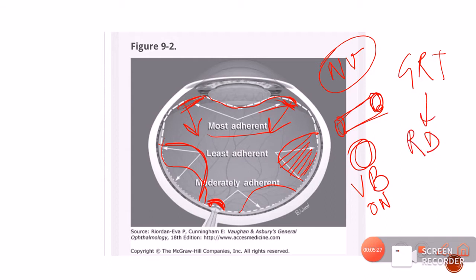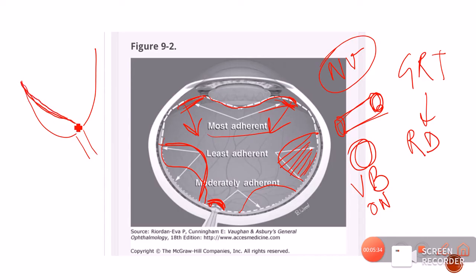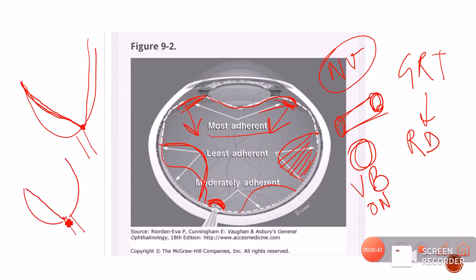Even once a PVD separates — if it is an incomplete PVD — the attachment will be on either side of the disc and not exactly in the center of the disc. However, in case of an RD, the RD will always be present on either side of the optic nerve. That point we should remember.